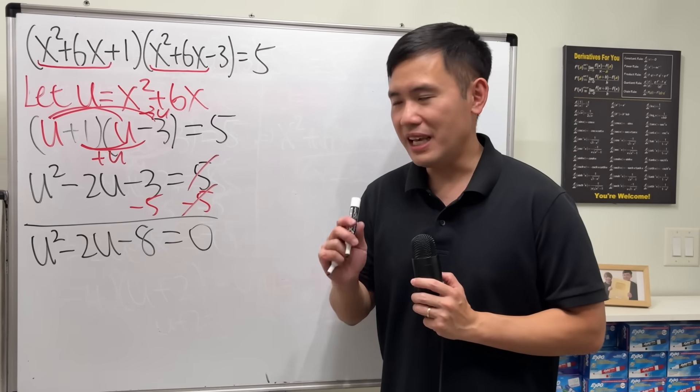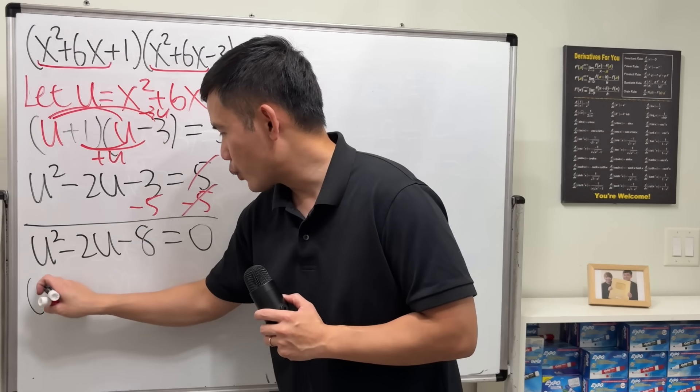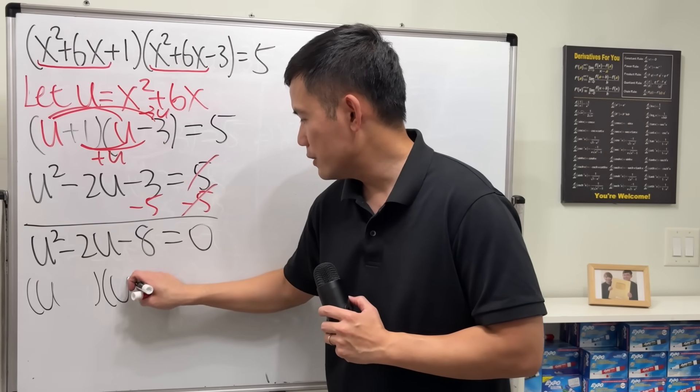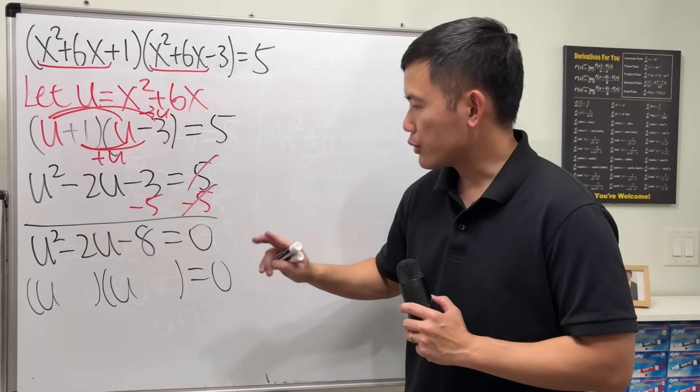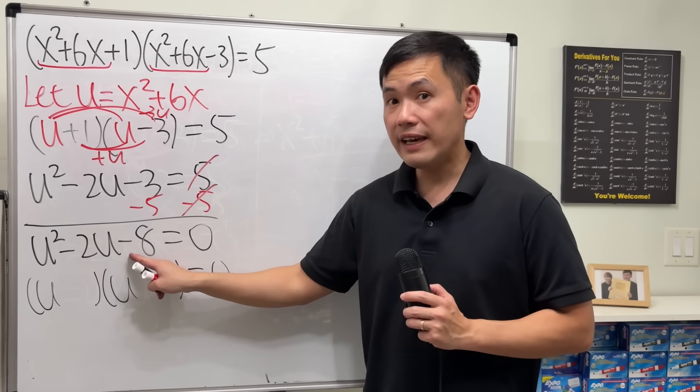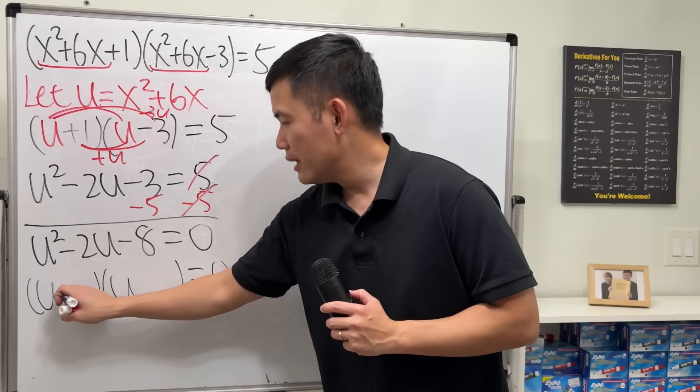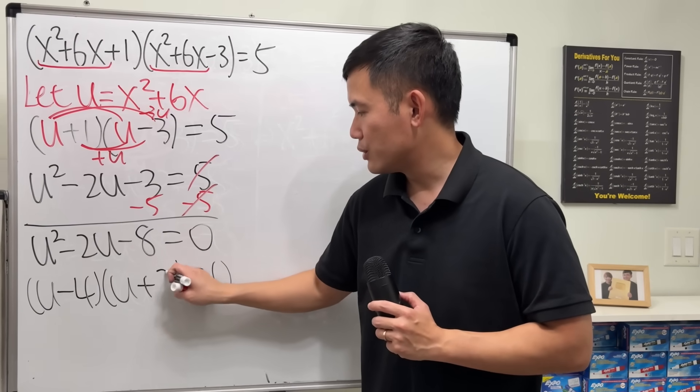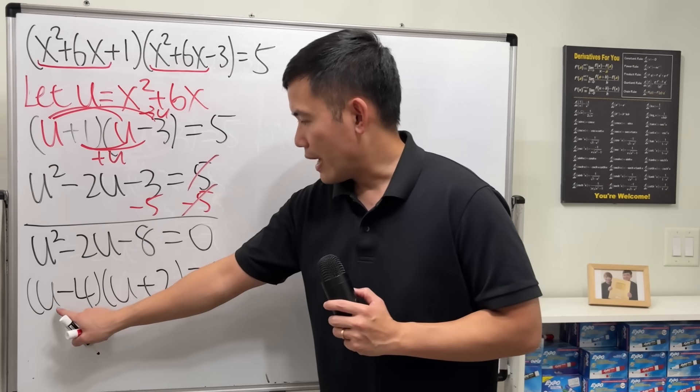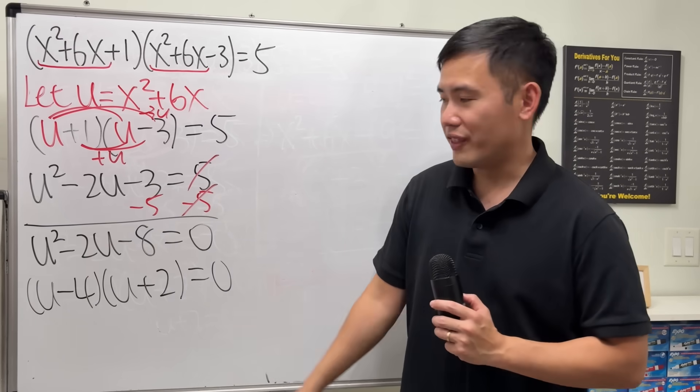Can we factor this? Yes, because we only have u squared, we just need u and u. Now, two numbers multiply to negative 8, and together, they add up to negative 2. We need negative 4 and plus 2. Now, this times this is equal to 0, then you can do the usual thing.